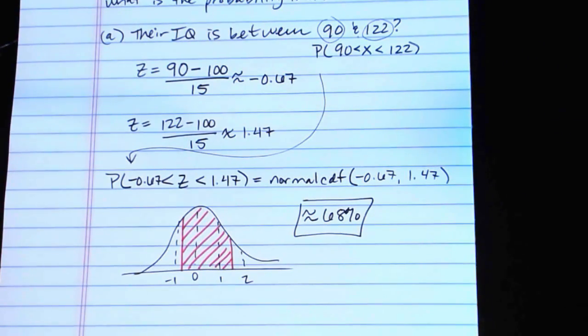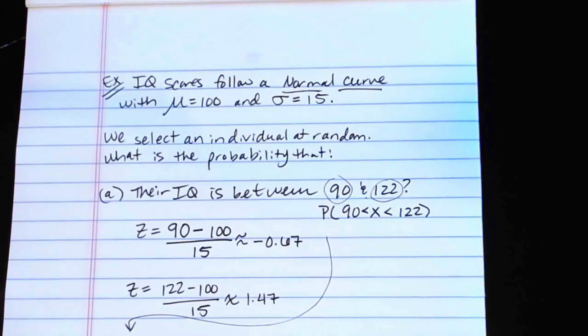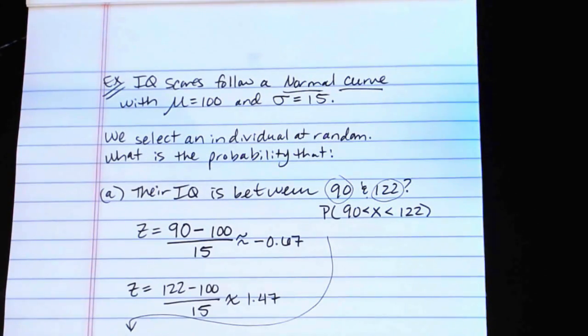And that's the basic idea with the application problems. That's this type of an application problem, where you're coming up with the probability of a particular event. In the next video, we'll take a look at another type of application problem that's commonly termed a guarantee problem, and it has a little bit different approach.